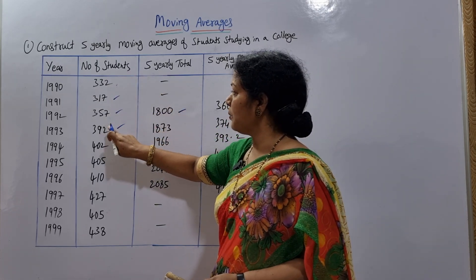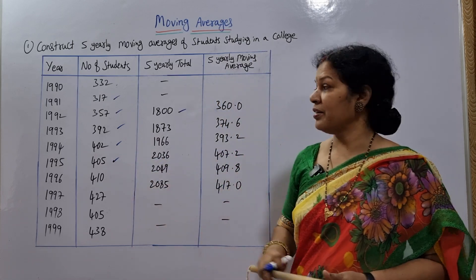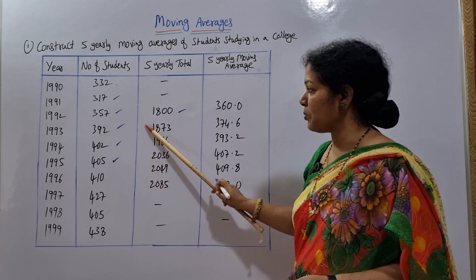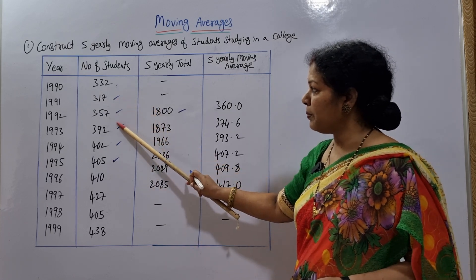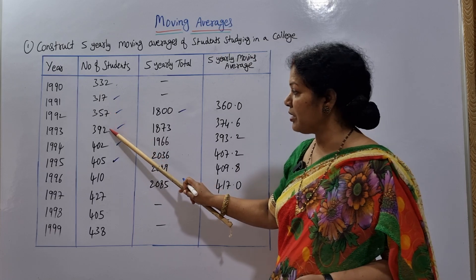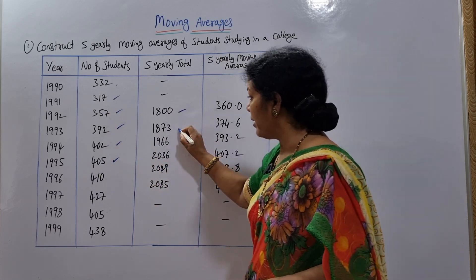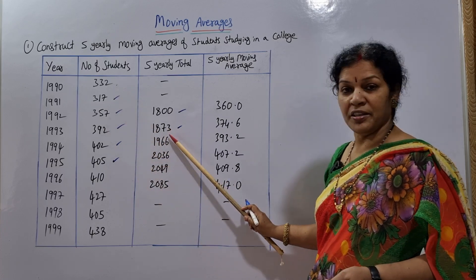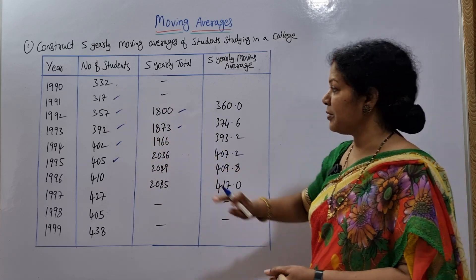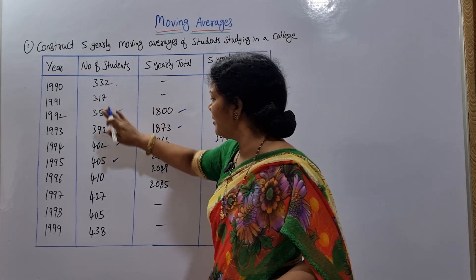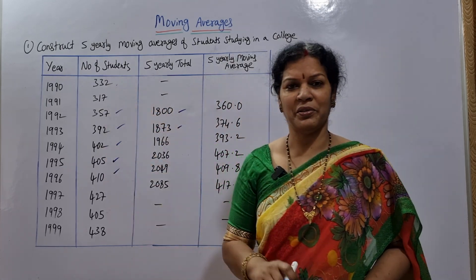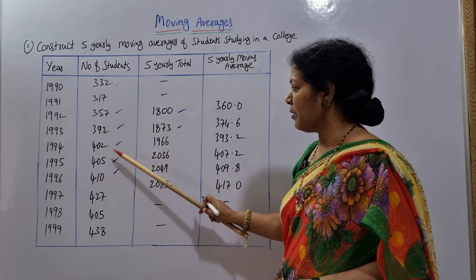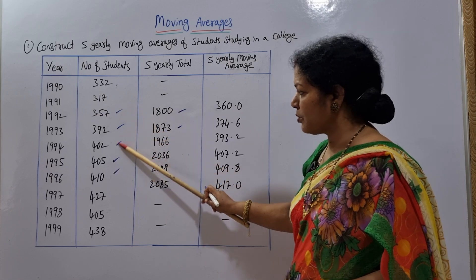For the next five-year total, we move one step forward: 317, 357, 392, 402, 405 — totaling 1873. We post this opposite to the new middle. Then next five years: 357, 392, 402, 405, 410 — totaling 1966. This total is posted opposite to its middle. Each time we subtract the first number and add the next one.